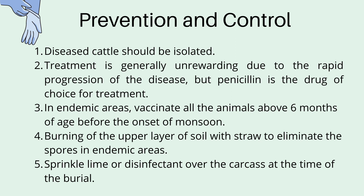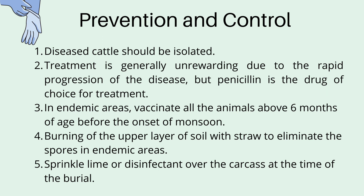For prevention and control, the diseased cattle should be isolated. Treatment is generally unrewarding due to the rapid progression of the disease, but penicillin is the drug of choice. In endemic areas, vaccinate all animals above six months of age before the onset of monsoon. Burning the upper layer of soil with straw to eliminate spores in endemic areas is also helpful. Sprinkle lime or disinfectant over the carcass at the time of burial.